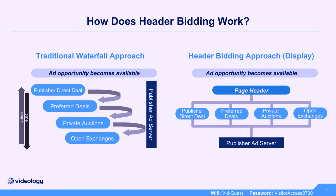Header bidding was originally more technical and operational. There was code buyers could put within the page header, which allowed them — before the ad server call was made — to see information about the audience, understand it, and provide a price they'd be willing to pay, leveling the playing field to compete with other opportunities within the waterfall.